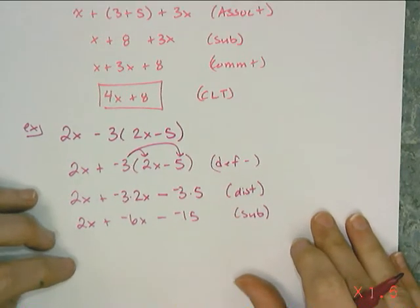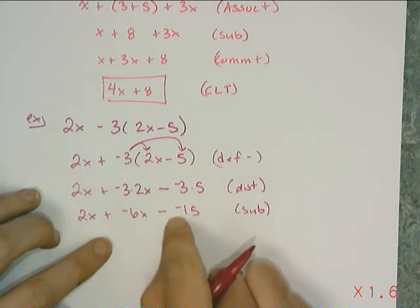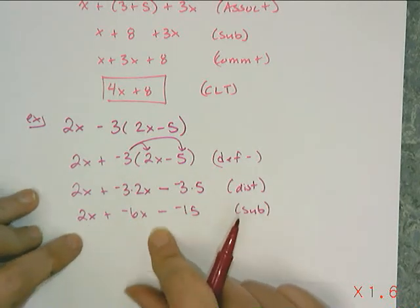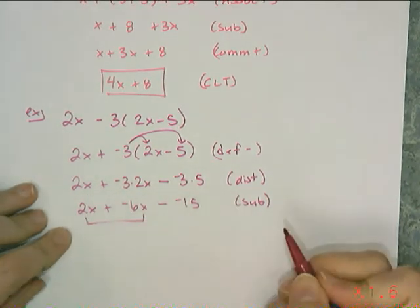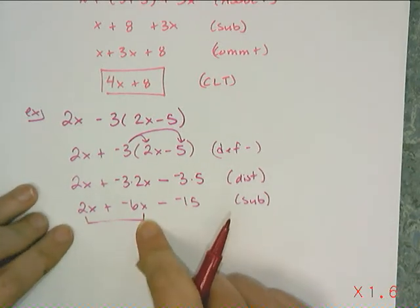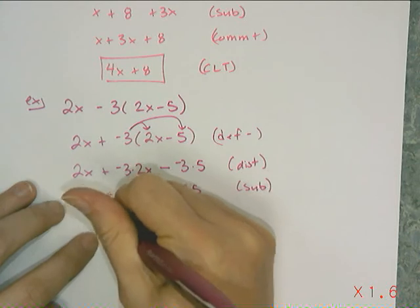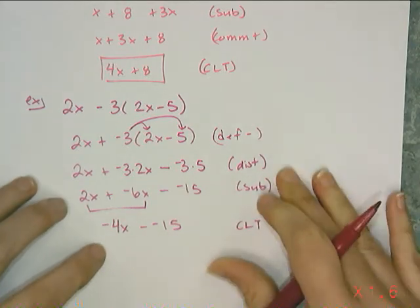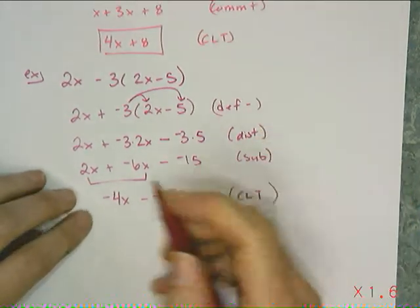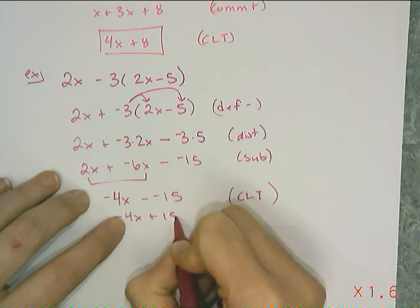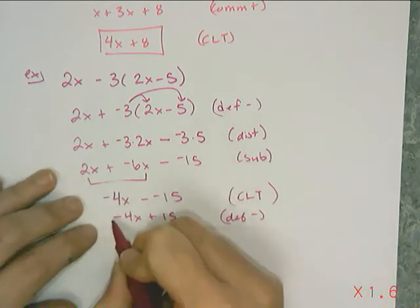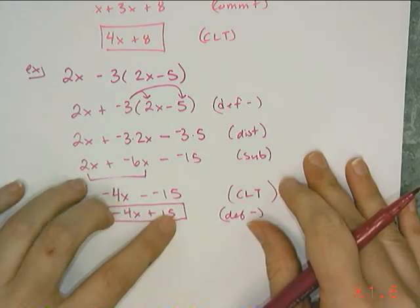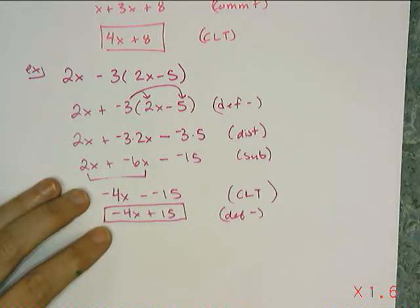Now I need to fix the minus a negative. I can't commute subtraction, so I need to rewrite it so it only has addition. If I have 2x plus negative 6x, combining like terms gives me negative 4x. And I have negative 4x minus negative 15. I don't like the minus a negative, so I change that to plus 15 using the definition of subtraction. The variable term is first with its coefficient, the 15 is at the end, and the signs are simplified. Now I just need to check that I did this correctly.